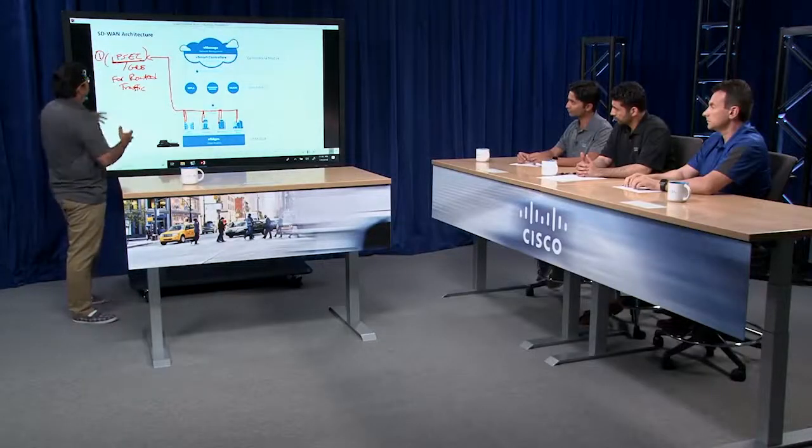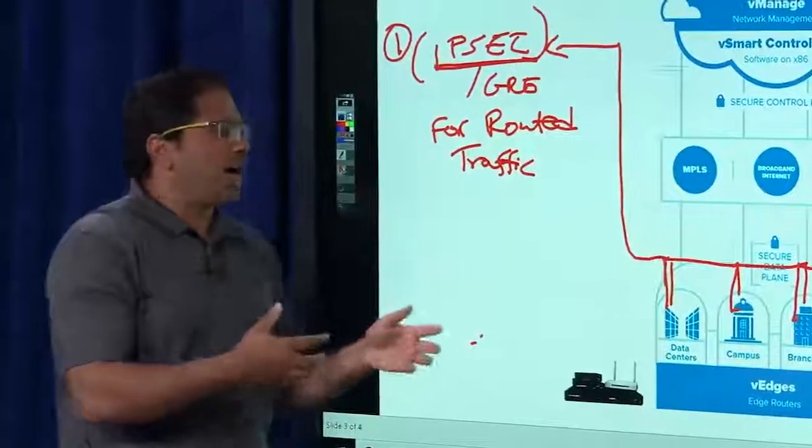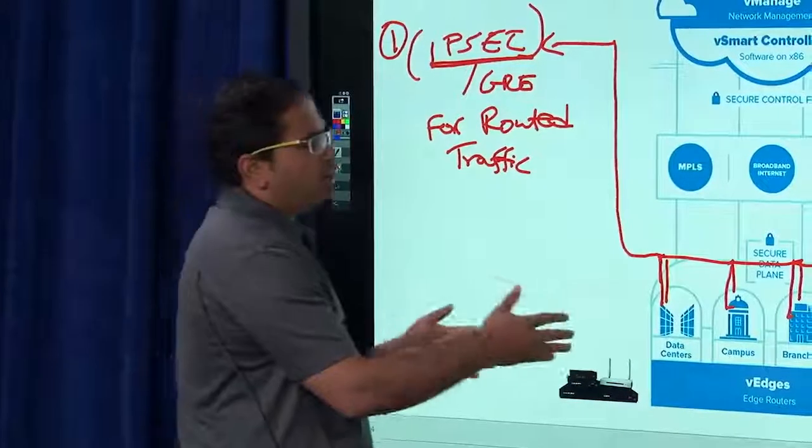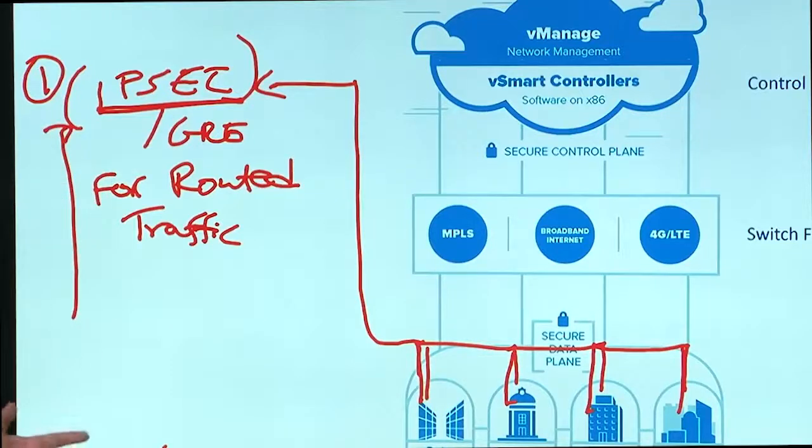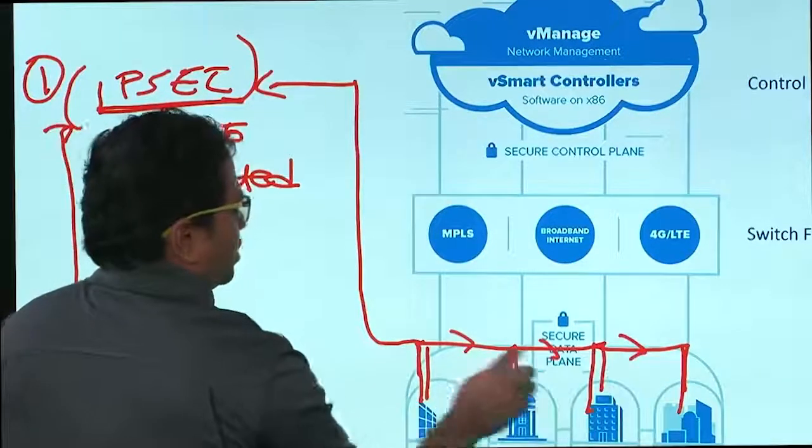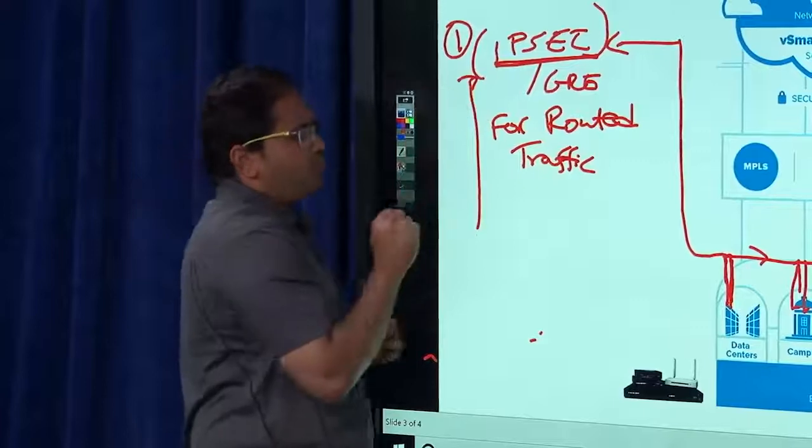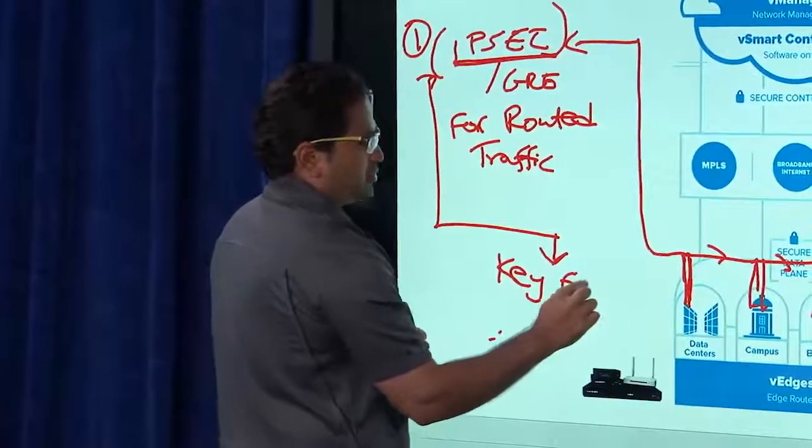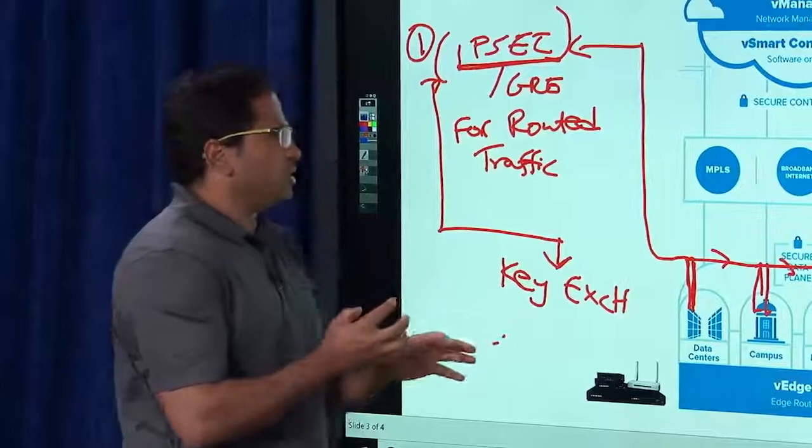Thanks, Ali. So essentially, why we need a secure channel is because this routed traffic is running over an unsecured internet. If you have an MPLS line or a private network, you essentially could get past the security aspect of it, but now your data is going on an unsecured channel. What you need is some security protocol that actually forms a secure channel for your branch devices. What does IPsec need? It requires a key exchange. Why it requires? Let's talk a little bit about security over here.